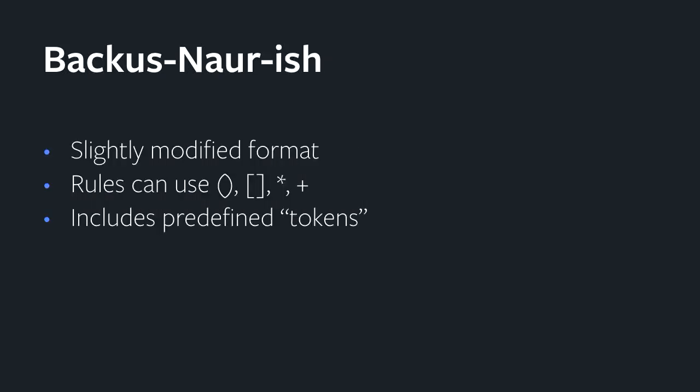In the case of Python it actually uses a modified form of this. The tokenizer deals with more than just white space — it also gives you some helpful tokens for numbers, string literals, variable names, and more. The rules can also use more complicated structures like parentheses for alternative structures, or you can use square brackets or star for optional elements.